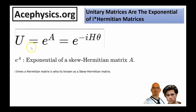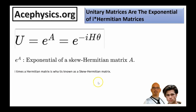The exponential of i times any Hermitian matrix is a unitary matrix — this is an important theorem. If you take any Hermitian matrix, multiply it by i and then by theta, you get a unitary matrix. The negative sign is just a convention. Also, i times a Hermitian matrix is called a skew-Hermitian matrix.